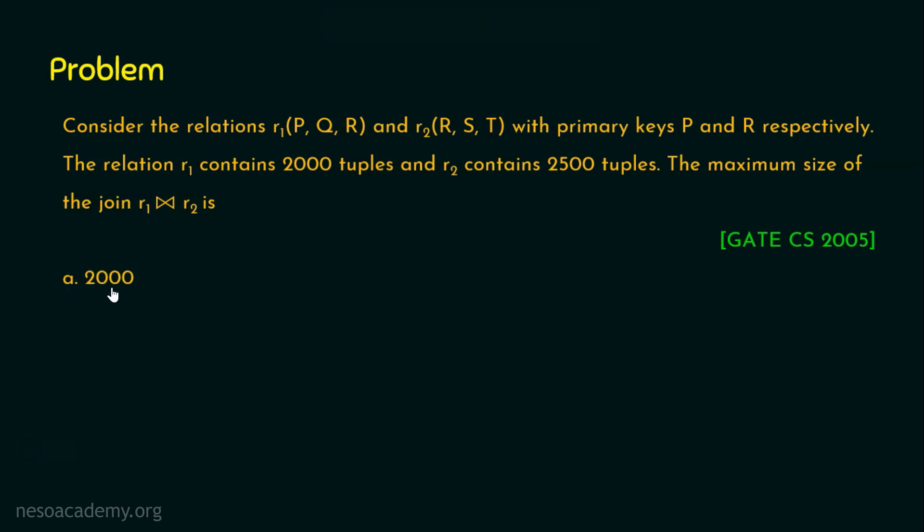The options are: option A, 2000; option B, 2500; option C, 4500; and option D, 5000.